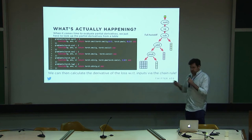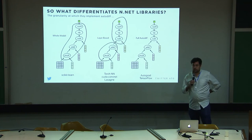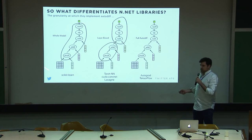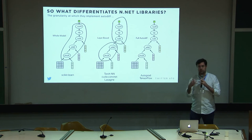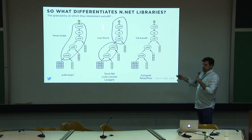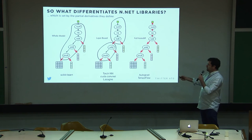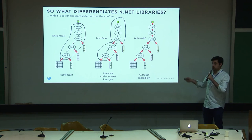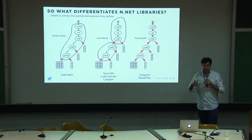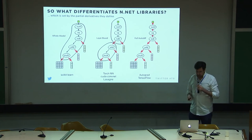What makes different neural network libraries different is the granularity at which they implement autodiff. For something like scikit-learn, you get the whole model or nothing — no composability. With TorchNN or similar, you get these big chunks of layers. With full autodiff, you get every single element. The composability is defined by which partial derivatives the developers have defined. What we've done in Autograd is define all of them, so if you want to write any differentiable expression or neural network, you can use any function in Torch and compose them just like writing regular numeric code.